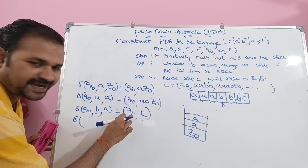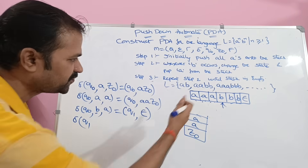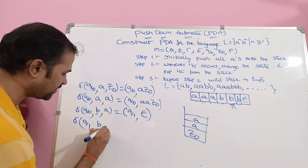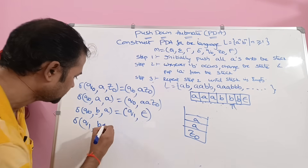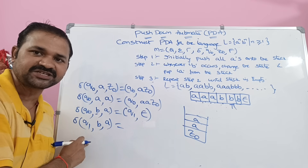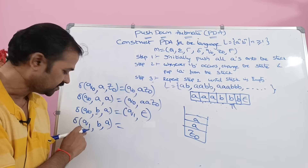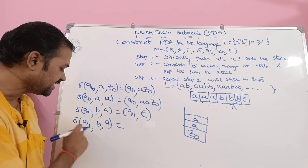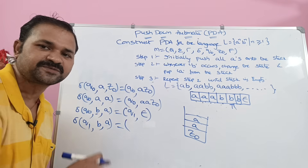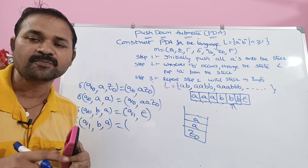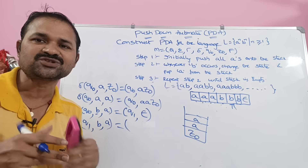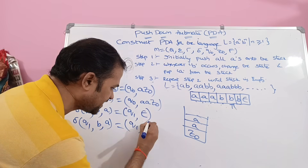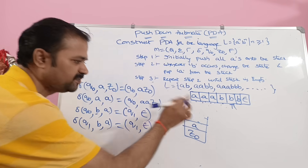Next, delta of q1 comma B comma A. Now the state is q1. The input symbols are the same and the top of the stack is the same, but there is a change in the state. Here the input symbol is B, so we perform the pop operation. This is the second pop operation, so there is no need to change the state — q1 only. So q1 comma epsilon. This A will be popped from the stack.